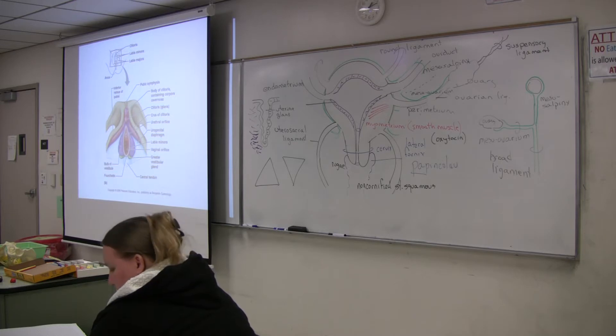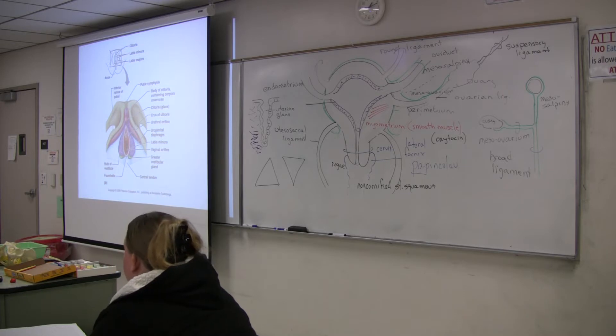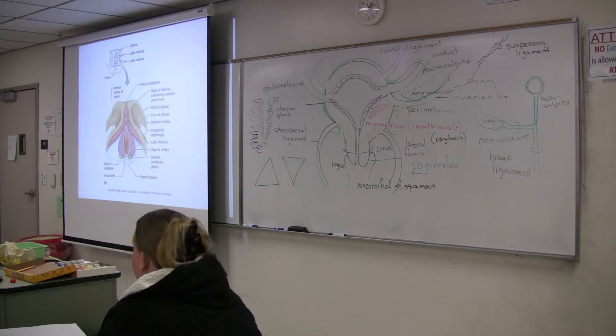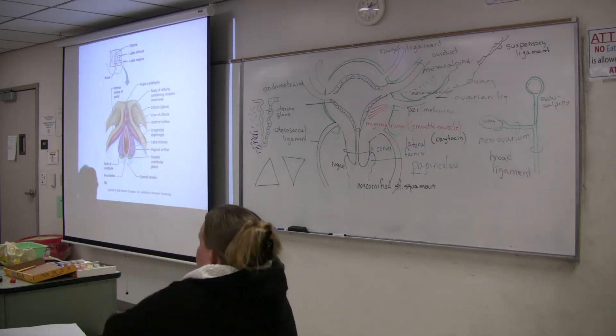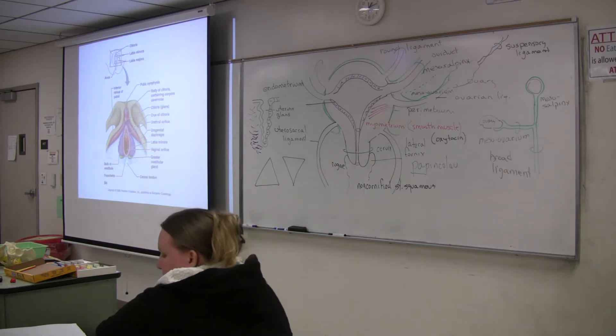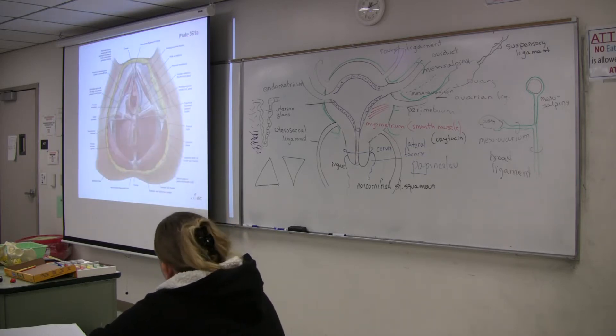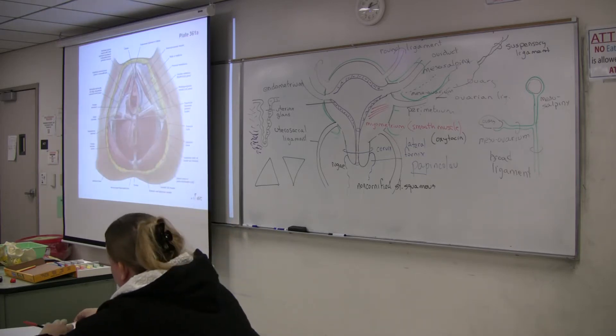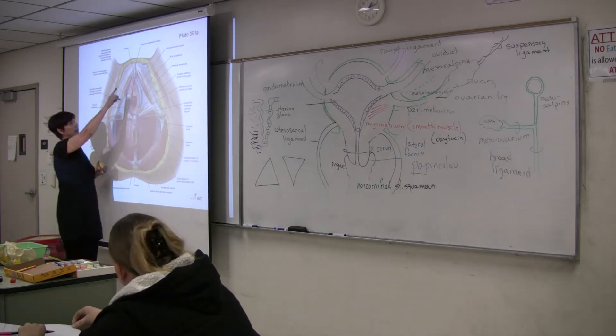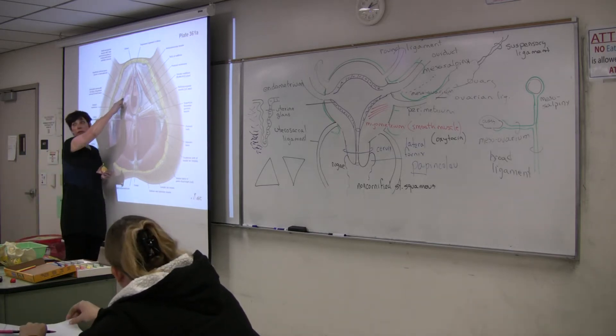Remember the muscles that we had in the male? The crus of the penis was covered by the skeletal muscle identified as the ischiocavernosus, and the bulb was covered by the bulbospongiosus. So if we look at the female, the crus is here covered by the ischiocavernosus.